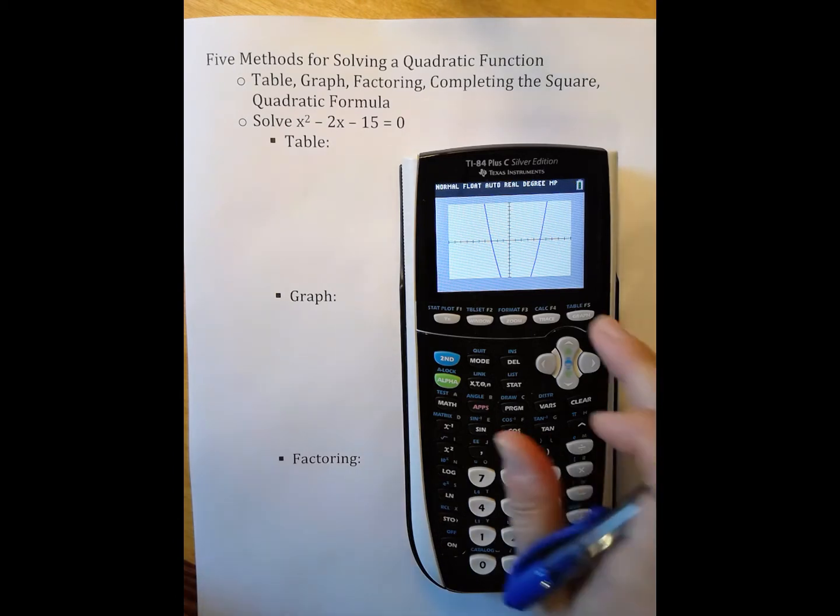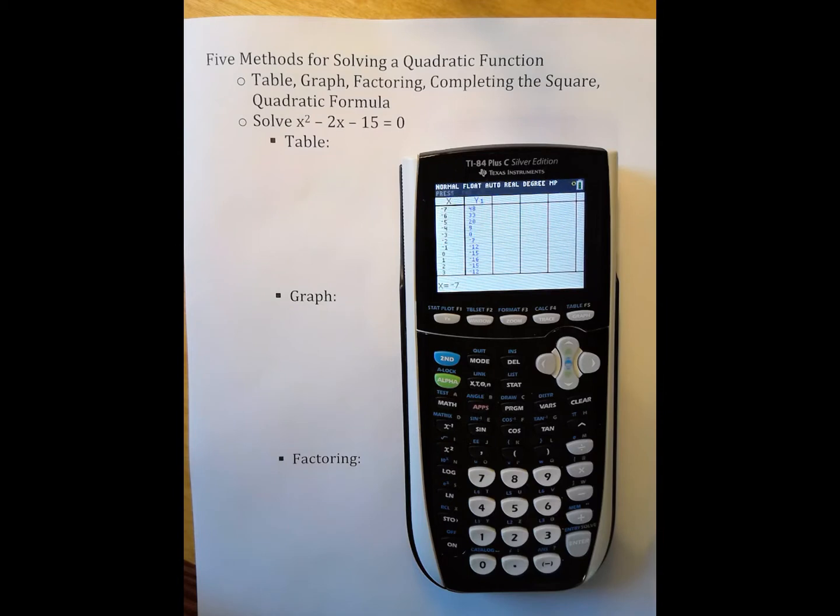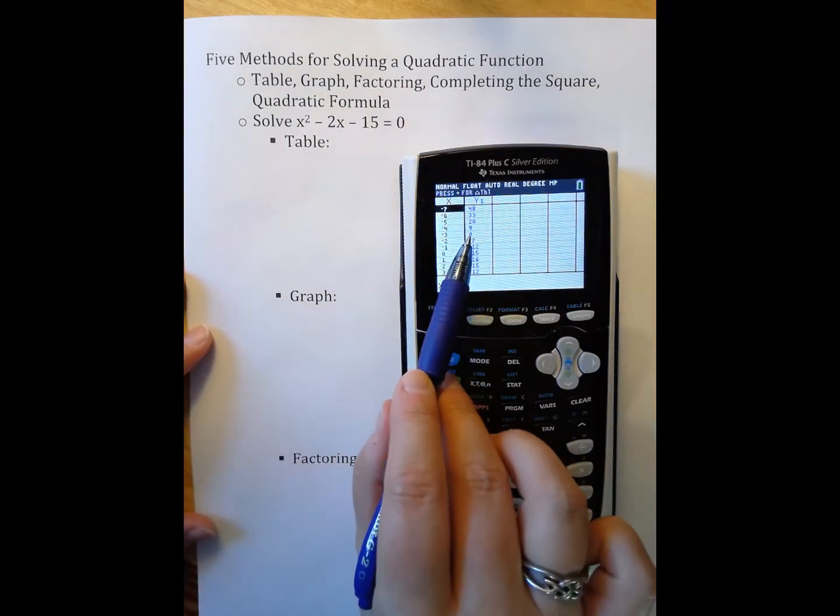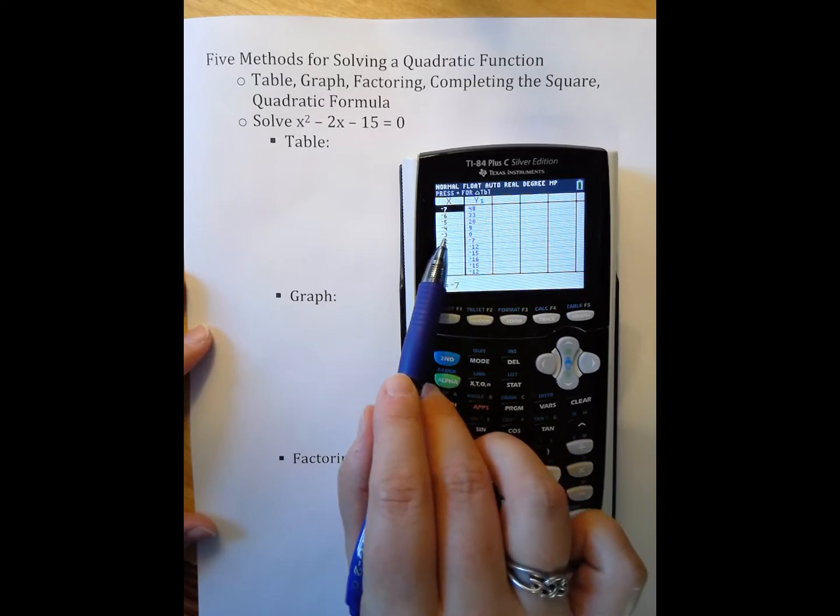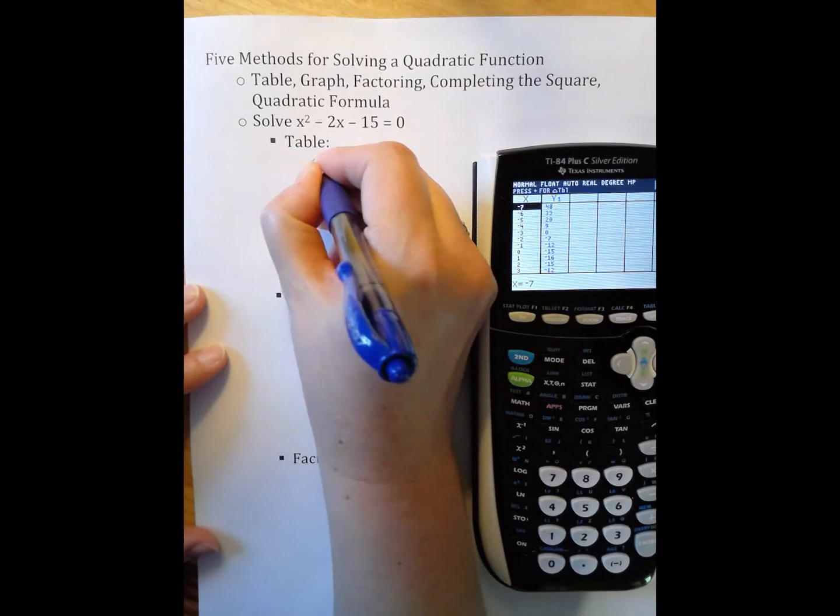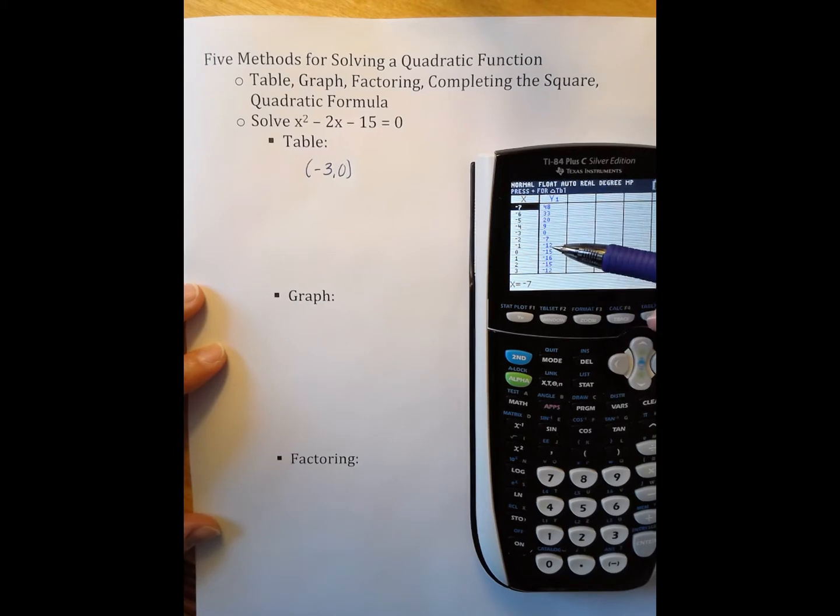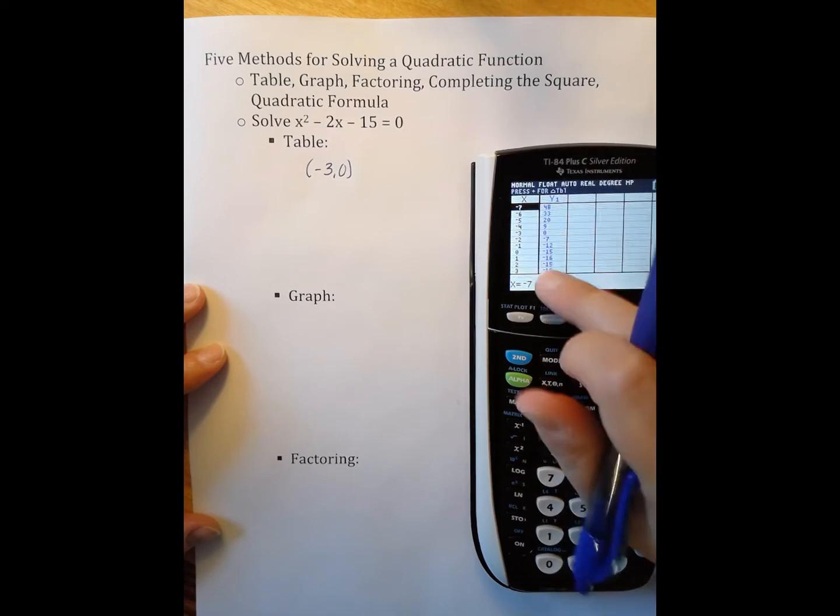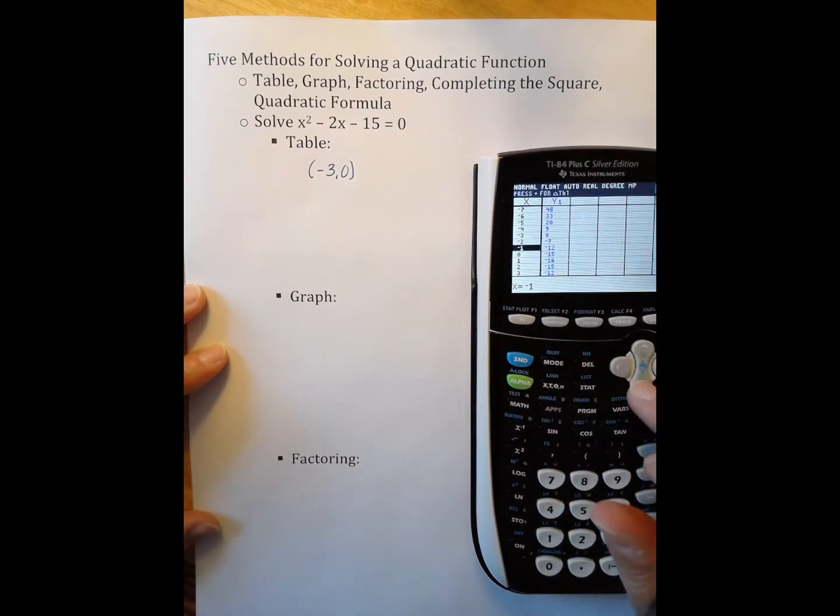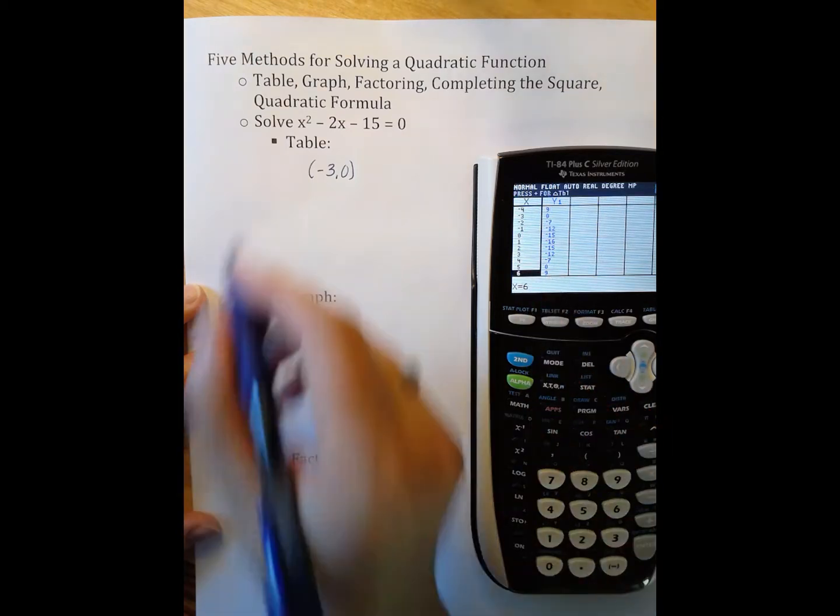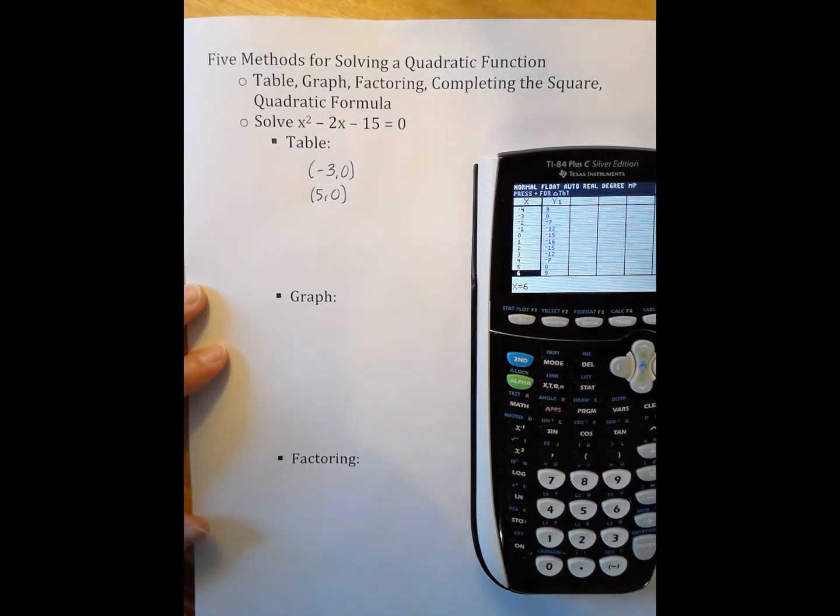And this gives me a much, much better picture. So for the table, I'm going to go to the table, which is second graph. And I can see here, when I'm looking at my table, that I'm looking for when y is 0, and y is 0 right here when x is negative 3. And then I can see here that the numbers, right here is my turning point. See how these are both negative 12, which means that my vertex is right there, 1 negative 16, which means my other x-intercept is going to be higher than 3. And lo and behold, there it is.